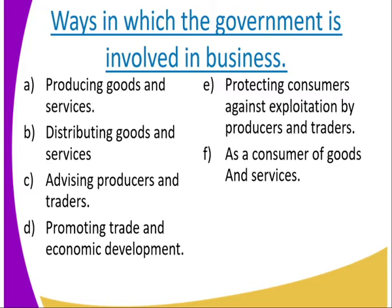Number five: protecting consumers against exploitation by producers and traders. This means ensuring that goods are measured correctly and are of the right standard. Number six: acting as a consumer of goods and services.